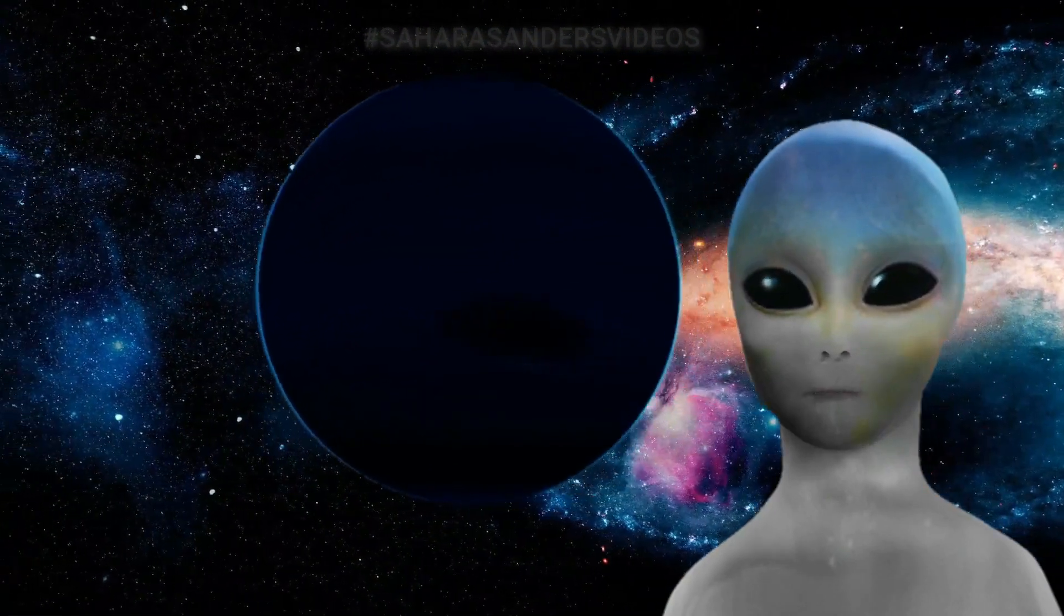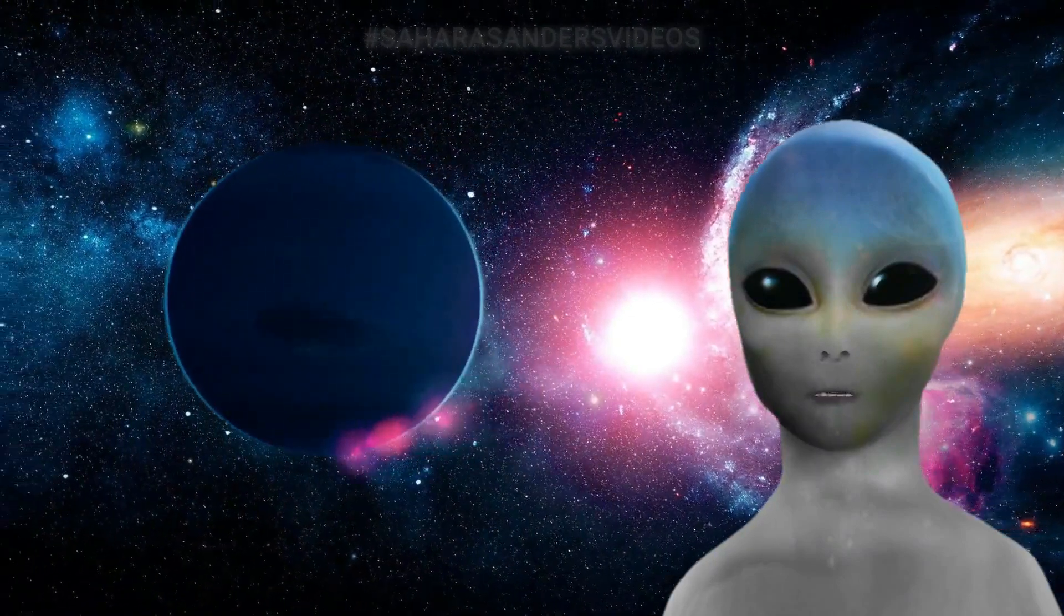Number 6: Neptune is the coldest planet and has the strongest winds in the solar system.